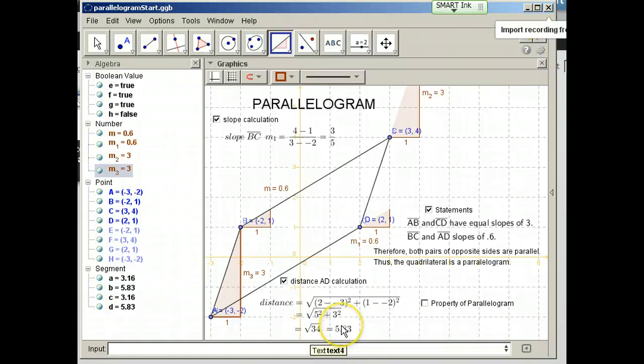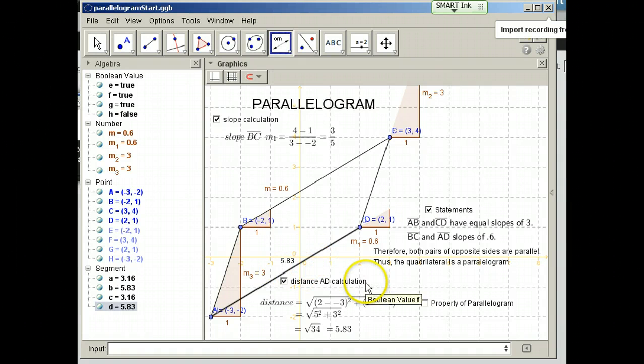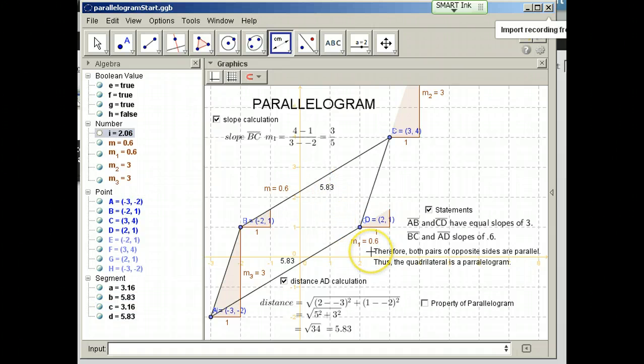Now, you should certainly practice doing the distance calculation by hand. You'll be expected to do that. But we can ask GeoGebra to calculate all our distances for us. So if I want to know a distance, I can find the distance or length and click on this segment, and it says 5.83. I click on this segment, it's also 5.83. This side is 3.16. And this side here is also 3.16.